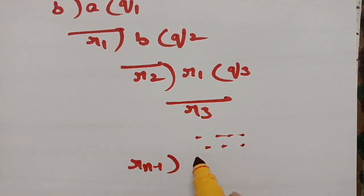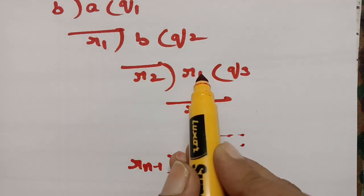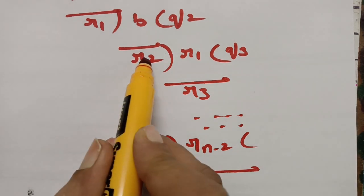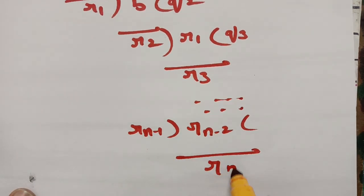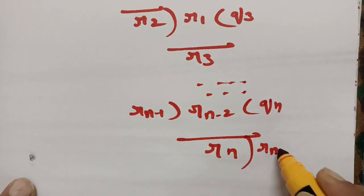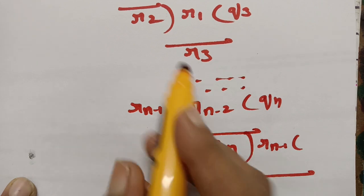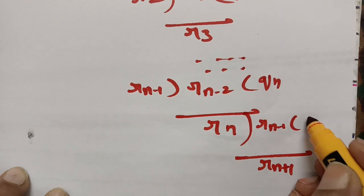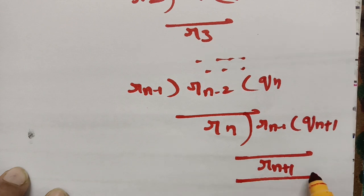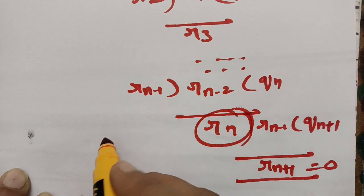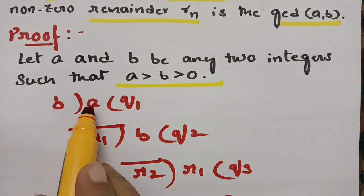At the last step, we have Rn−2 divided by Rn−1 giving quotient Qn and remainder Rn. Then Rn−1 divided by Rn gives quotient Qn+1 and remainder Rn+1. If Rn+1 equals 0, then this last non-zero remainder Rn will be the GCD of A and B.